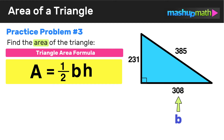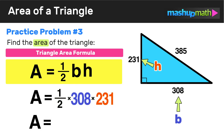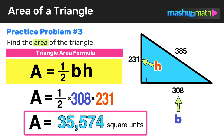Since this is a right triangle, the height is the perpendicular line from the base that is adjacent to the base — and in this case it's 231, so we label that side H and replace H with 231 in the formula. One half times 308 times 231 is equal to 35,574 square units. It's a very large area, but that is the area of the triangle.